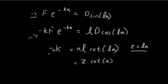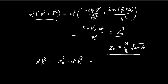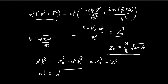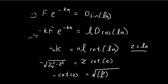Using z₀, we can simplify further. We have a²k² = z₀² - a²l² = z₀² - z², so ak = √(z₀² - z²). This gives us the transcendental equation: -z·cot(z) = √(z₀² - z²), which can be rearranged to: -cot(z) = √(z₀²/z² - 1). This is the transcendental equation we're interested in.